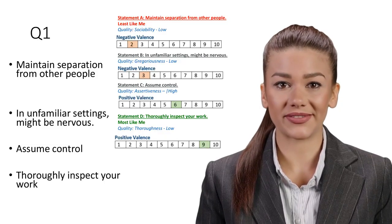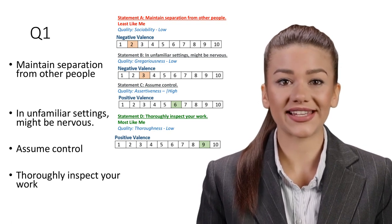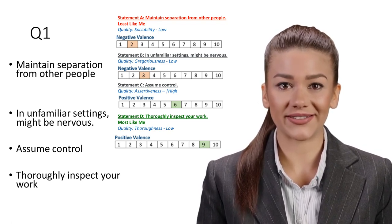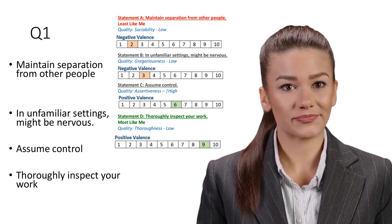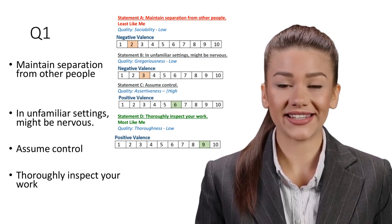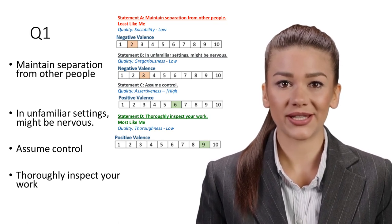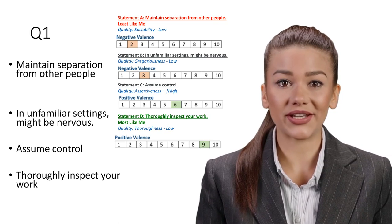Question 1. Statement A: Maintain separation from other people. Least like me. Quality: Sociability, Low. A lack of a strong relationship connection will eventually dissipate any sense of belonging a staff member felt towards their employers, as well as team cohesion and performance.